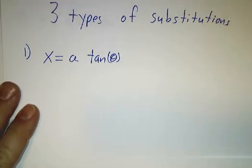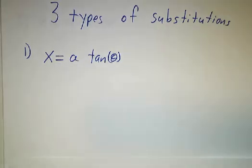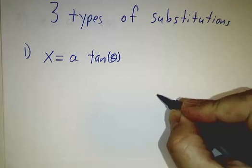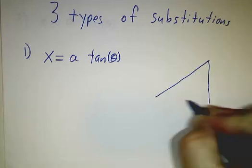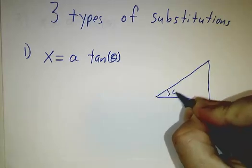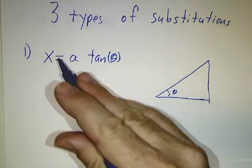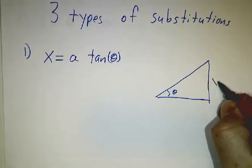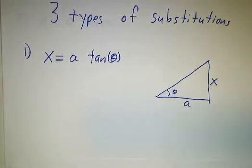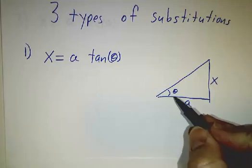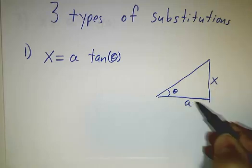The first is where you let x be a multiple of the tangent of θ. So if x is a tangent of θ, you should think in terms of a triangle, where here's our angle θ, and the tangent is x over a, so you draw a triangle where the two legs are x and a. So x over a is the tangent, and x is a times the tangent.